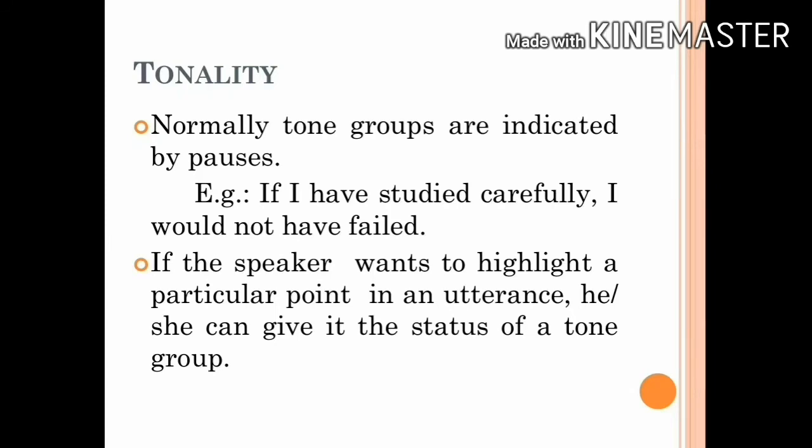Tonality. Normally, tone groups are indicated by pauses. In written English, pauses are indicated by commas, semicolons, and full stops. Therefore, generally, a tone group boundary coincides with one of these punctuation marks. For example, consider the sentence: if I have studied carefully, I would not have failed. In this sentence, there are two tone groups: 'if I have studied carefully' and 'I would not have failed.' Here, the two tone group boundaries coincide with one comma and full stop.